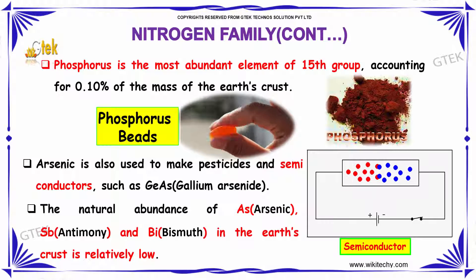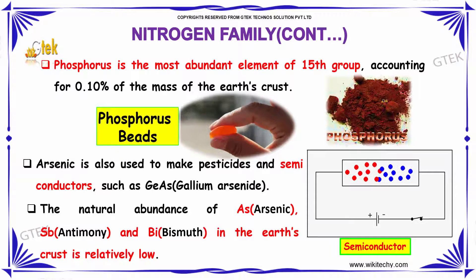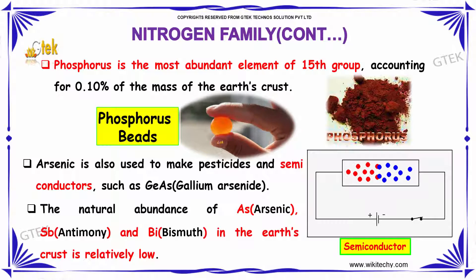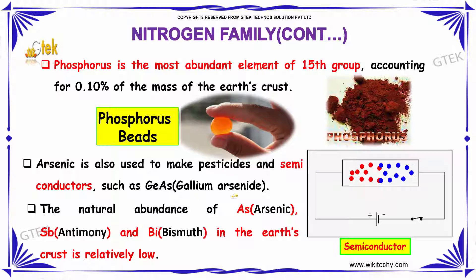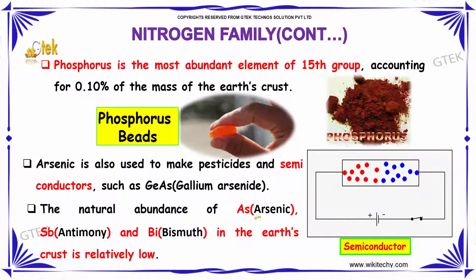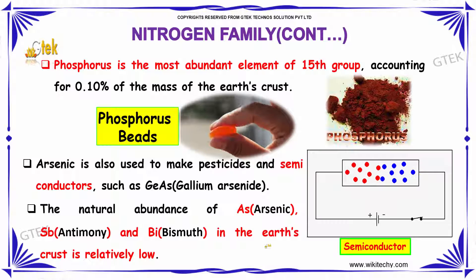Phosphorus is the most abundant element of the 15th group, accounting for 0.10 percent of the mass of the Earth's crust. Phosphorus is used in matchsticks. Arsenic is used to make pesticides and semiconductors such as gallium arsenide and germanium arsenide.